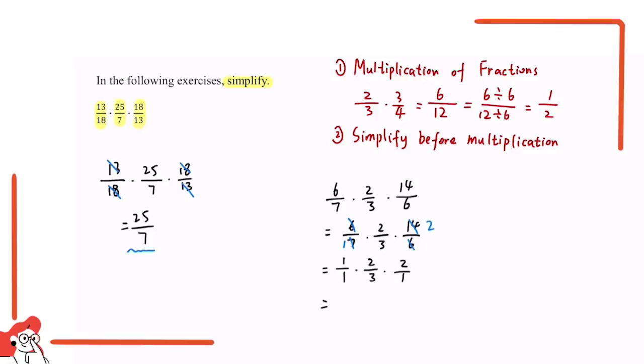Now let's multiply the numerator first. 1 times 2 times 2 is equal to 4. On the bottom, 1 times 3 times 1 is equal to 3. And that is the final answer for this practice.